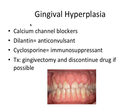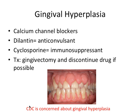Gingival hyperplasia — I would put this in bright neon bolded underlined letters because this is tested in every exam I can possibly think of. It is one of the most commonly tested things out there. Gingival hyperplasia, also sometimes called gingival enlargement, refers to the literal enlargement of the gingiva, and it is a side effect of certain medications. I remember these with the mnemonic CDC: calcium channel blockers, dilantin, and cyclosporine. The CDC is concerned about gingival hyperplasia.